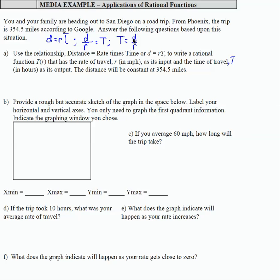So there is really the foundation of my function t of r. We just need to clean up the notation a little bit. So t of r, that just means t is the output time, the rate is the input, and that's the relationship described here, equals our constant distance 354.5 divided by r. So there's my function t of r.